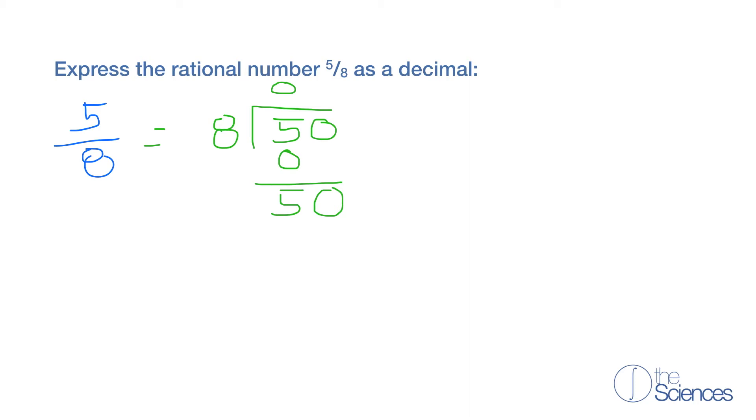So now how many times does 8 go into 50? Well that's 6. So now 6 times 8 is 48.